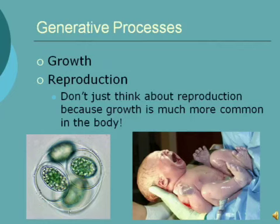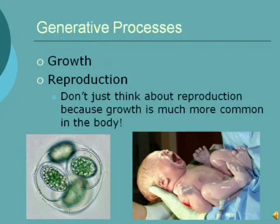On the left side, you can see a cell splitting into two identical cells for growth. On the right side, you can see an infant. An infant has to grow from one cell — conceived from sperm and egg — to trillions of cells by adulthood. Growth is a huge part of where our metabolism actually goes, and reproduction is a very small part of the generative process in the grand scheme of things.